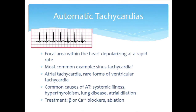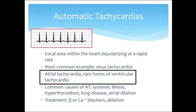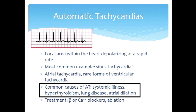In automatic tachycardia, there is a focal area within the heart depolarizing at a rapid rate. The simplest example is sinus tachycardia — you run on the treadmill, your heart rate goes up to 140, your body needs the cardiac output, and your sinus node responds by ramping everything up. There are other examples too, such as atrial tachycardia and some rare forms of ventricular tachycardia that can be automatic in nature.